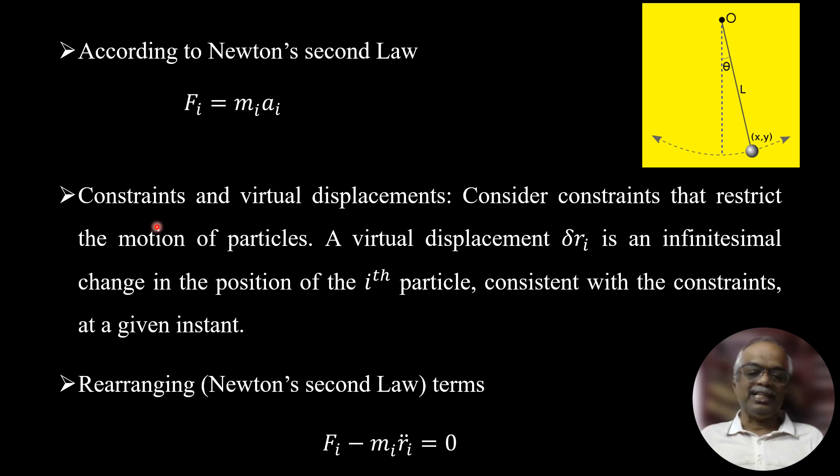Now we will deal with the constraint and virtual displacements. Consider the constraint restrict the motion of the particles. A virtual displacement δr_i is an infinitesimal change in the position of ith particle. So delta i is a very small change, infinitesimally small, consistent with the constraint at given instance.